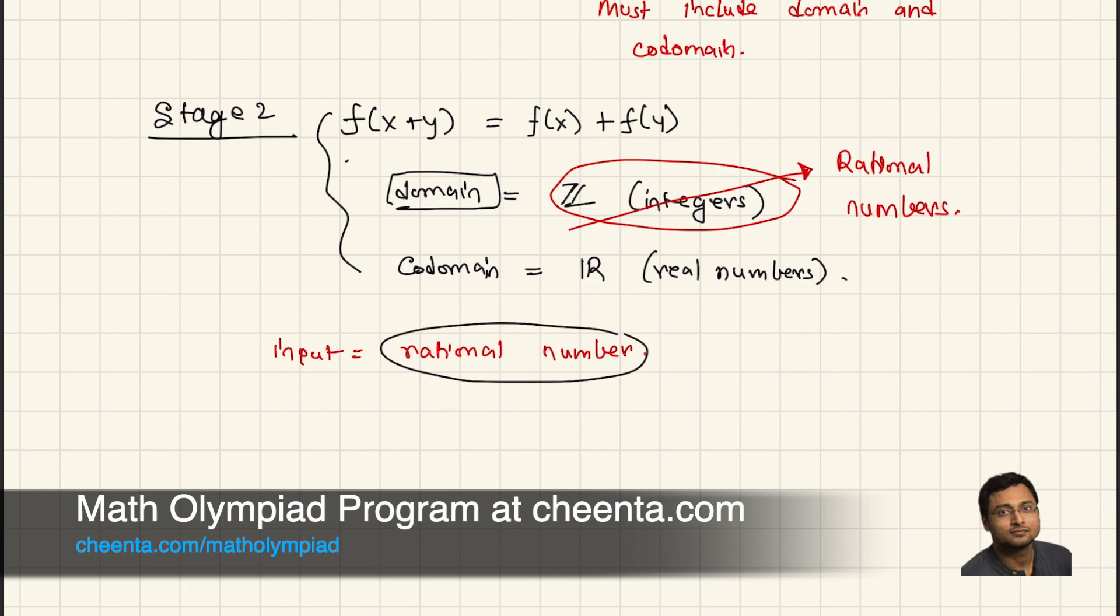So, a quick reminder, what is a rational number? A rational number S is of the form P over Q, where P and Q are integers. That's what S is.